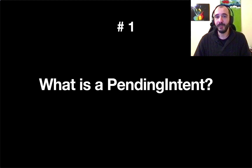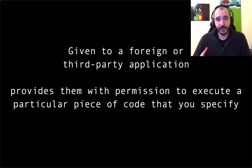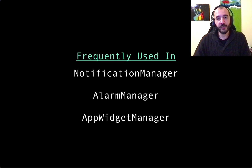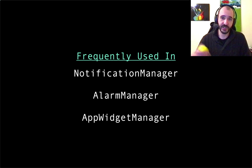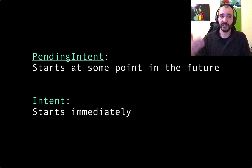Number one: what is a PendingIntent? A PendingIntent is given to a foreign or third-party application — you send it off to another application. It provides that application with permissions from your app to execute a piece of code that you decide on, giving them the permission and even the identity itself. It would be as if the app is executing the code on your behalf. You can see it frequently used in the NotificationManager when you want to send a notification, set an alarm, or use the AppWidgetManager. The PendingIntent starts at a point in the future — it's pending, it's not done yet. The regular Intent starts immediately.